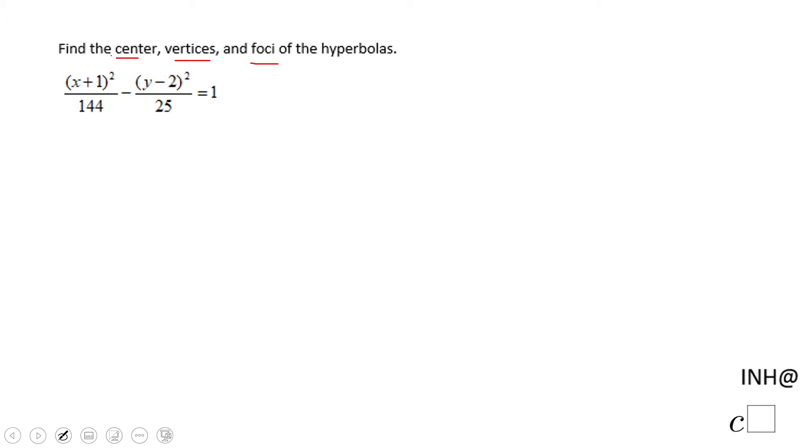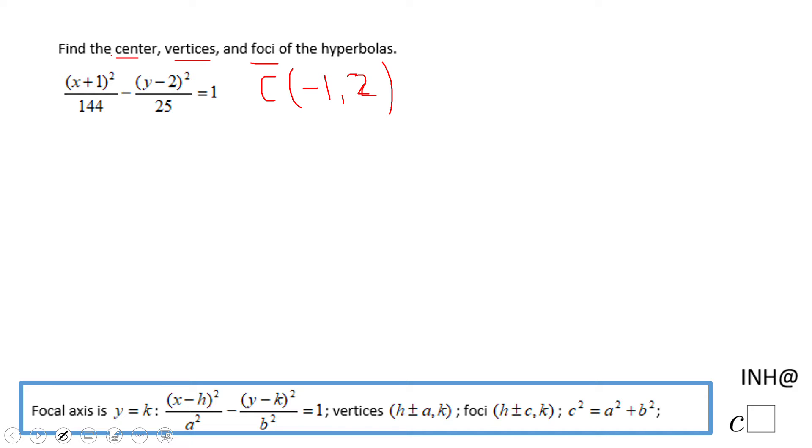So the center will be negative one and two, negative one and two, because we have x plus one, which is the same thing like x minus negative one. And we have y minus two, which will give me the h and k that you see down here. And that is the center.